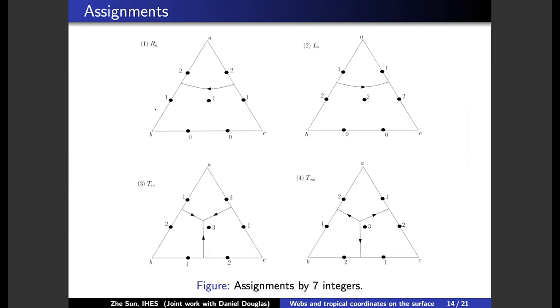And the way we parameterize this kind of geometric object is by assigning numbers in each ideal triangle. For each ideal triangle, we assign seven numbers. And the way we assign it is by putting, if we have an arc going from here to here, we put one on the left and put two on the right.